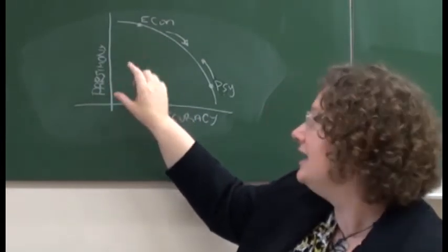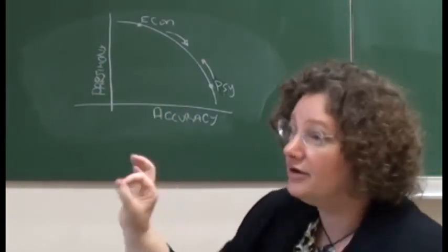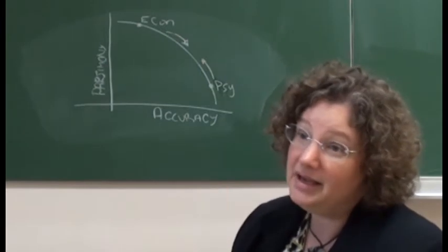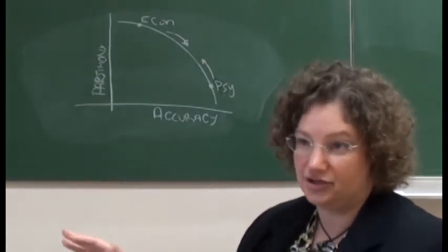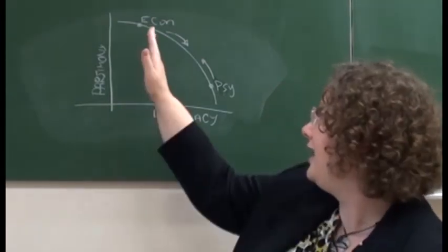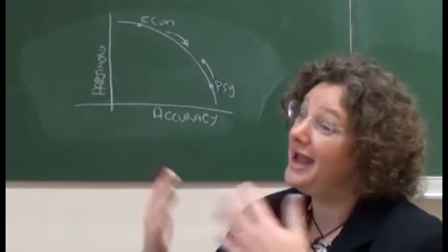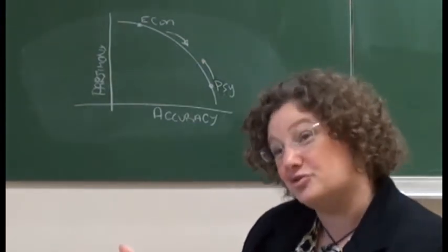So economics, as a science, is very parsimonious. There are very few degrees of freedom, and what that means is you can make a prediction of what will happen in a very wide range of scenarios. On the other hand, the accuracy is kind of low. So although you can make a prediction, often that prediction is wrong.